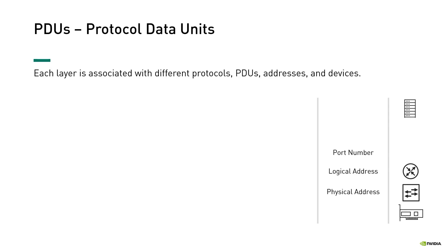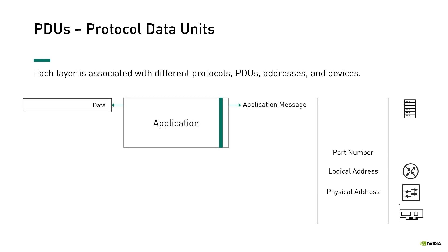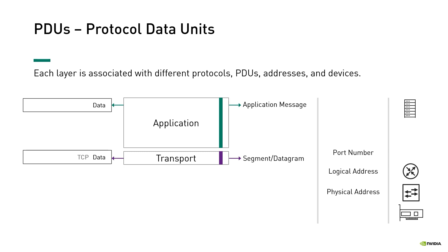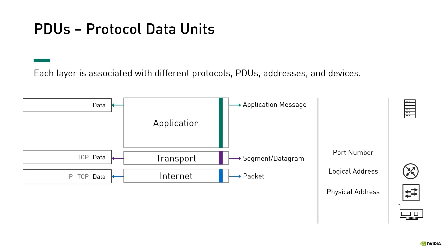Each layer is associated with different protocols, PDUs (protocol data units), addresses, and devices. The data generated at the application layer for network transmission is referred to as a message. A message is then encapsulated at the transport layer. The transport layer adds a layer 4 header that includes fields such as port numbers relevant for transport layer processing at the receiving nodes. A message encapsulated with a layer 4 header is called a TCP segment or UDP datagram — these are the layer 4 PDUs. A TCP segment or UDP datagram is handed over to the internet layer and further encapsulated with a layer 3 header containing, for example, source and destination IP addresses. The layer 3 PDUs are called packets, and packets are routed in the network by layer 3 devices called routers.